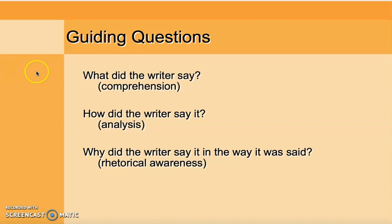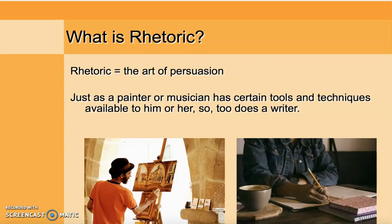We're not just reading it in order to simply comprehend it — that means just to basically summarize or state back what the writer had said. But we're doing these other two higher order critical thinking activities: understanding how the writer said it, so picking apart the text and analyzing its specific features, and then the highest level, having rhetorical awareness — understanding why the writer said it in the way that was said.